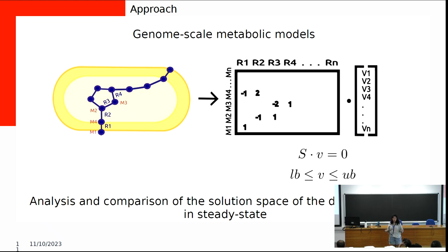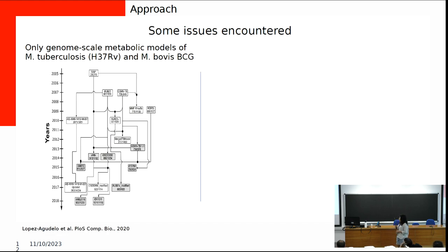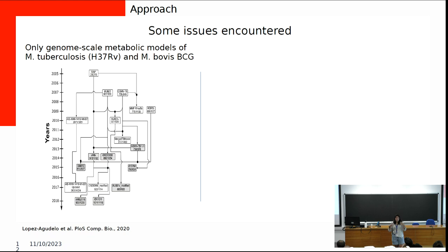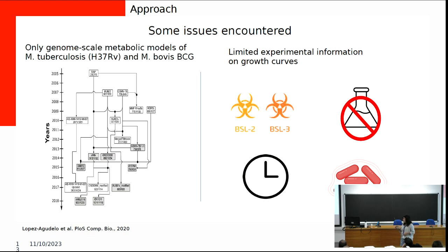There are some issues with this approach. There are only about two genome-scale models for mycobacteria, mostly for MTB and a few MTB strains, plus Mycobacterium bovis BCG used for vaccines. These two are very similar and were even merged at one point. So we would have to reconstruct more models for other species. There are also the experimental limitations I mentioned — Biosafety Level 2 and 3 requirements, growth only on solid media for some species.